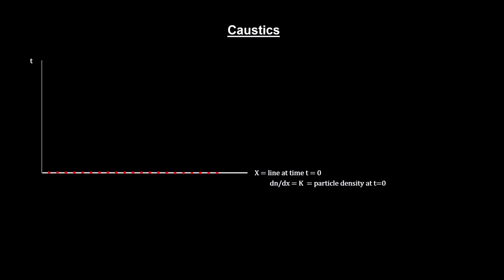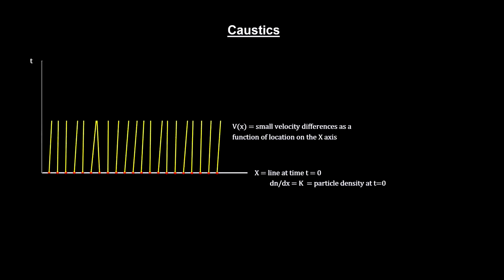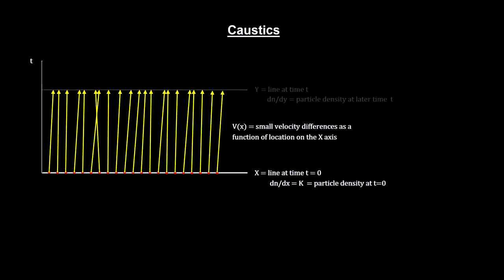Picture a set of uniformly distributed particles on a line, each with slightly different velocities. They start out with a uniform particle density. But, because of the small velocity differences, the particle density will vary as time goes by. Areas of high and low density will develop.